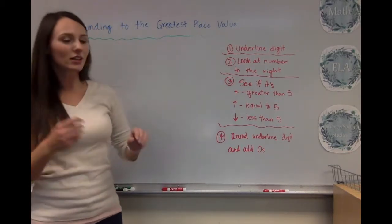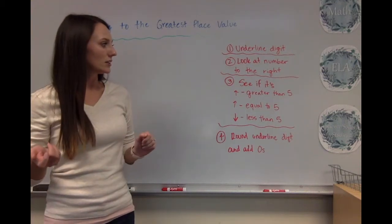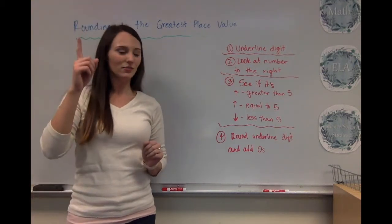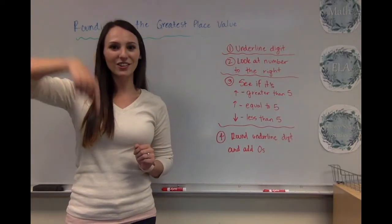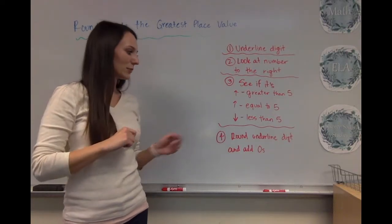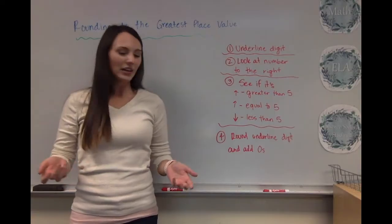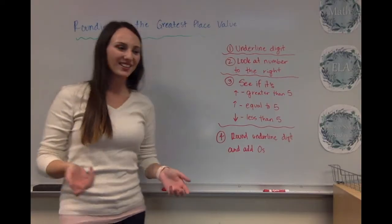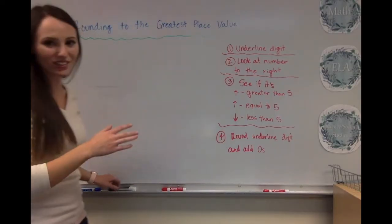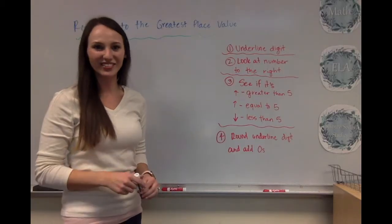So number two, you're going to look at the number to the right. Number three, you're going to see if it's greater than five, equal to five, or less than five. Then number four, round the underline digit and then add some zeros. Okay, so let's actually demonstrate this with some numbers so it can make a little bit more sense.